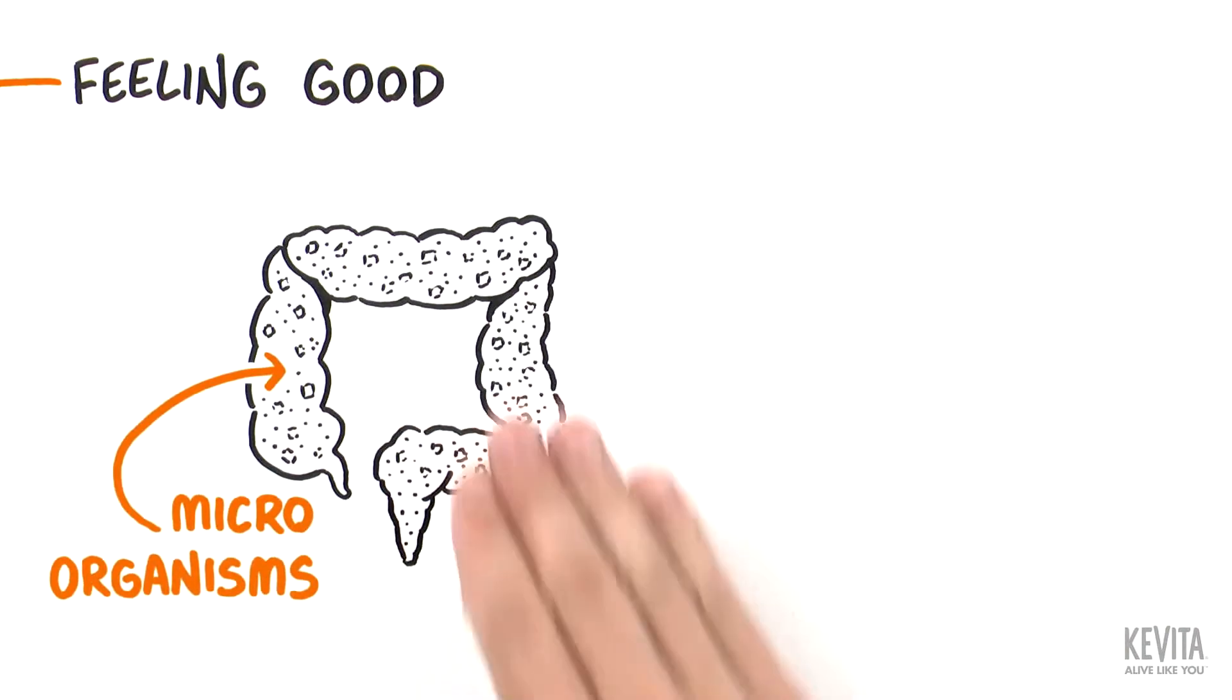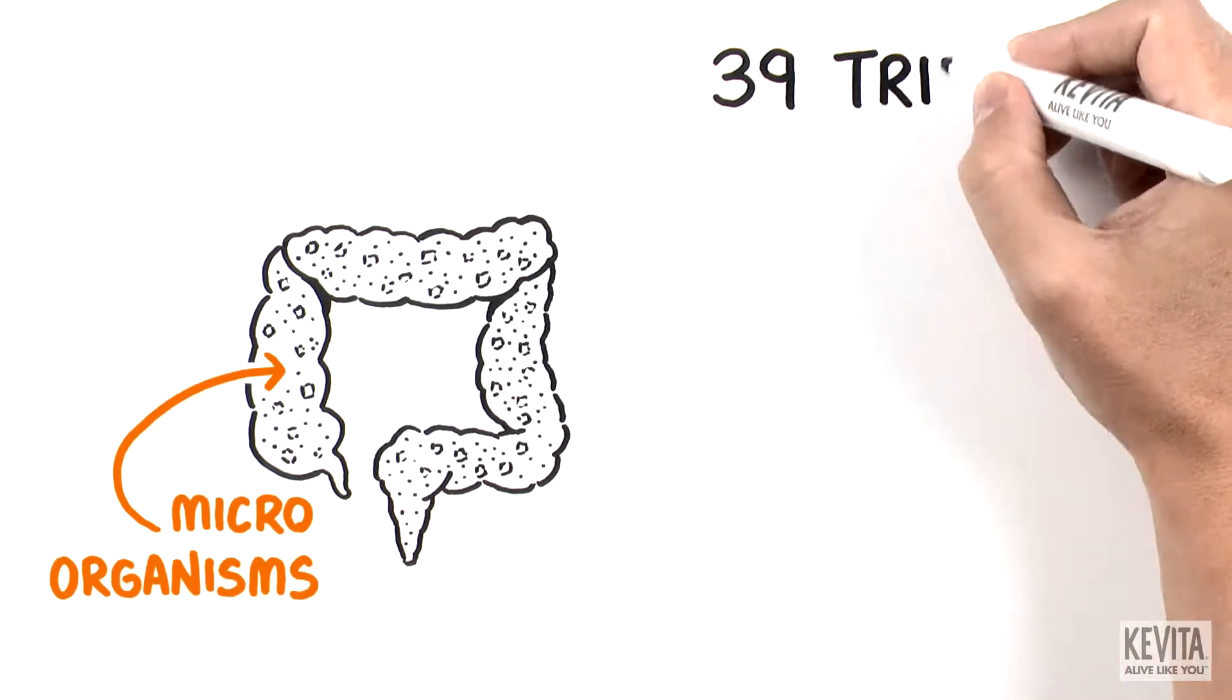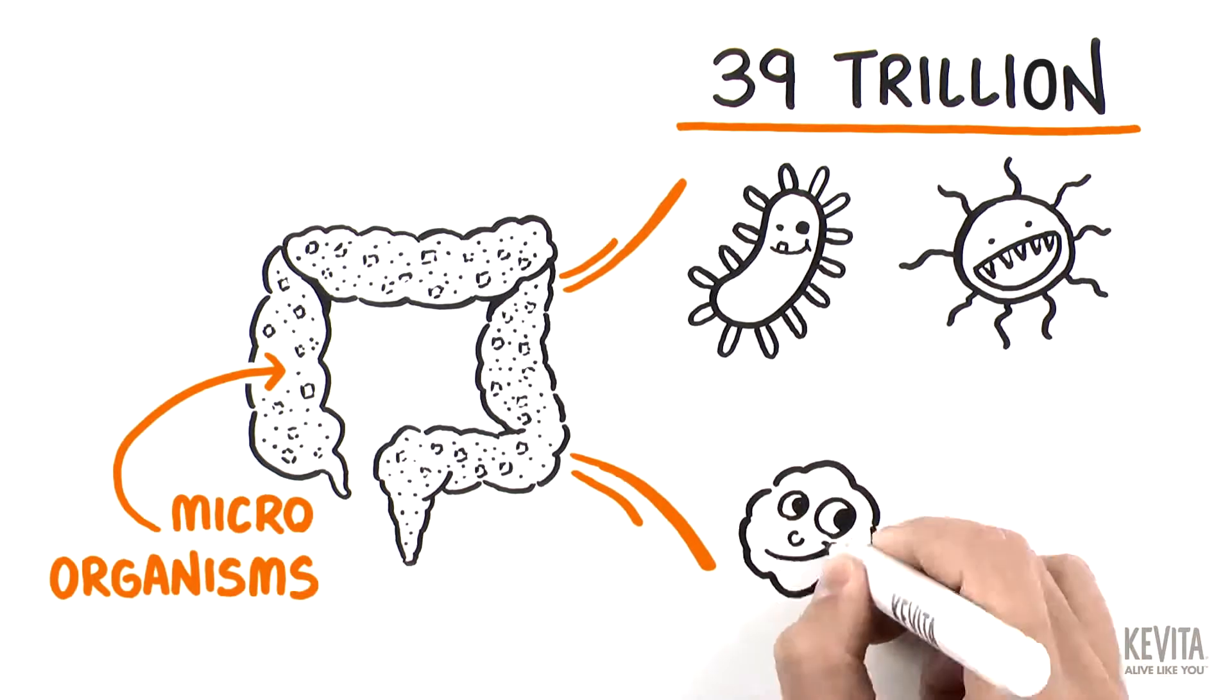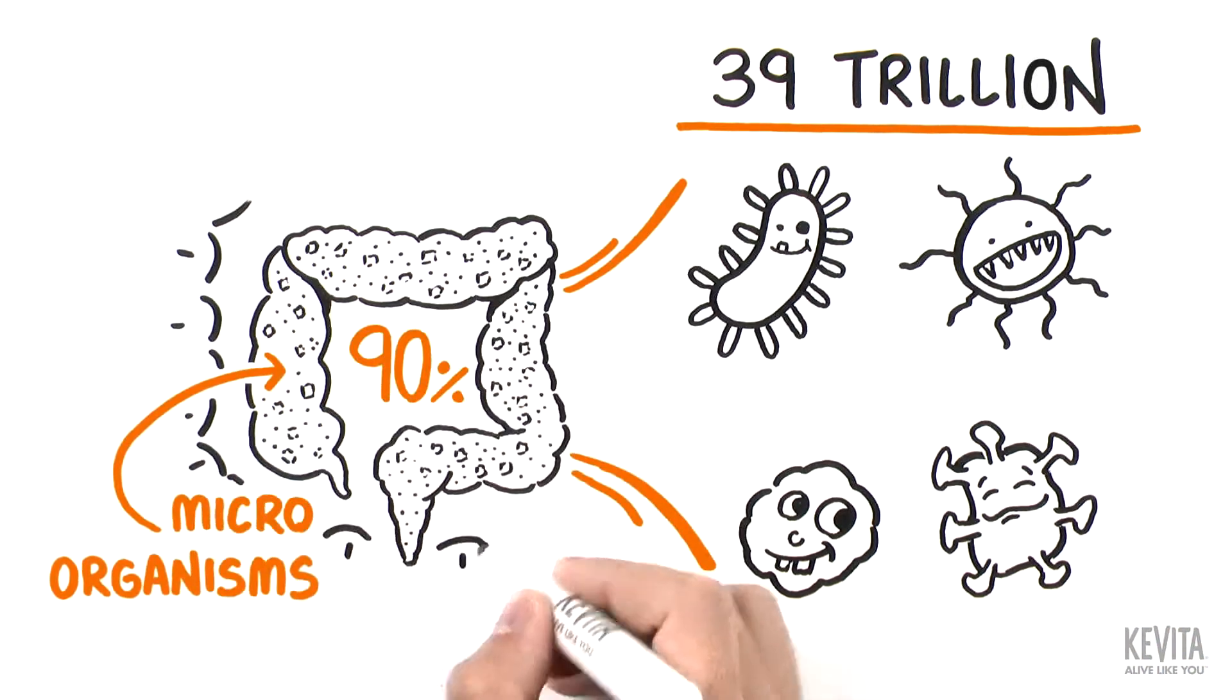You might be shocked to hear that right at this moment, you've got about 39 trillion, yes, that's trillion with a T, bacteria in and on your body, with around 90% of them living in the large intestine.